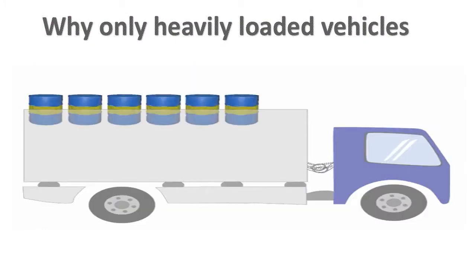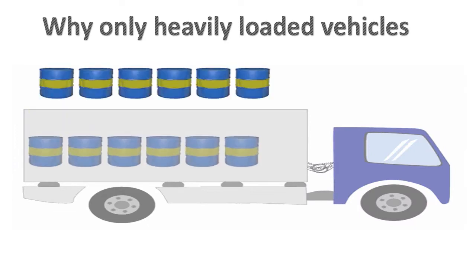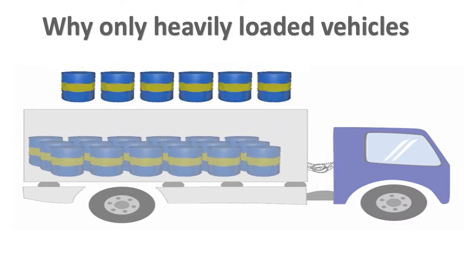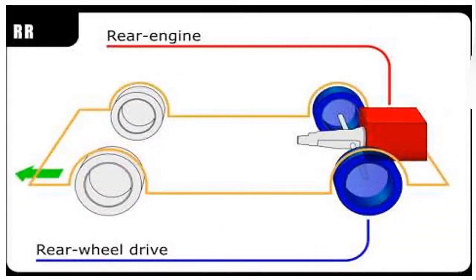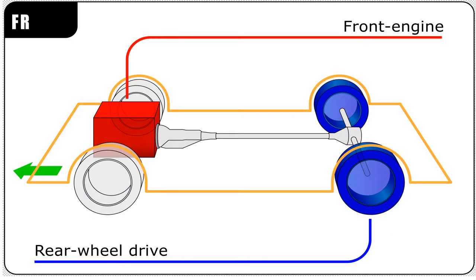Why only heavily loaded vehicles occur in this problem means curve resistance? Why only heavily loaded vehicles are in this problem?